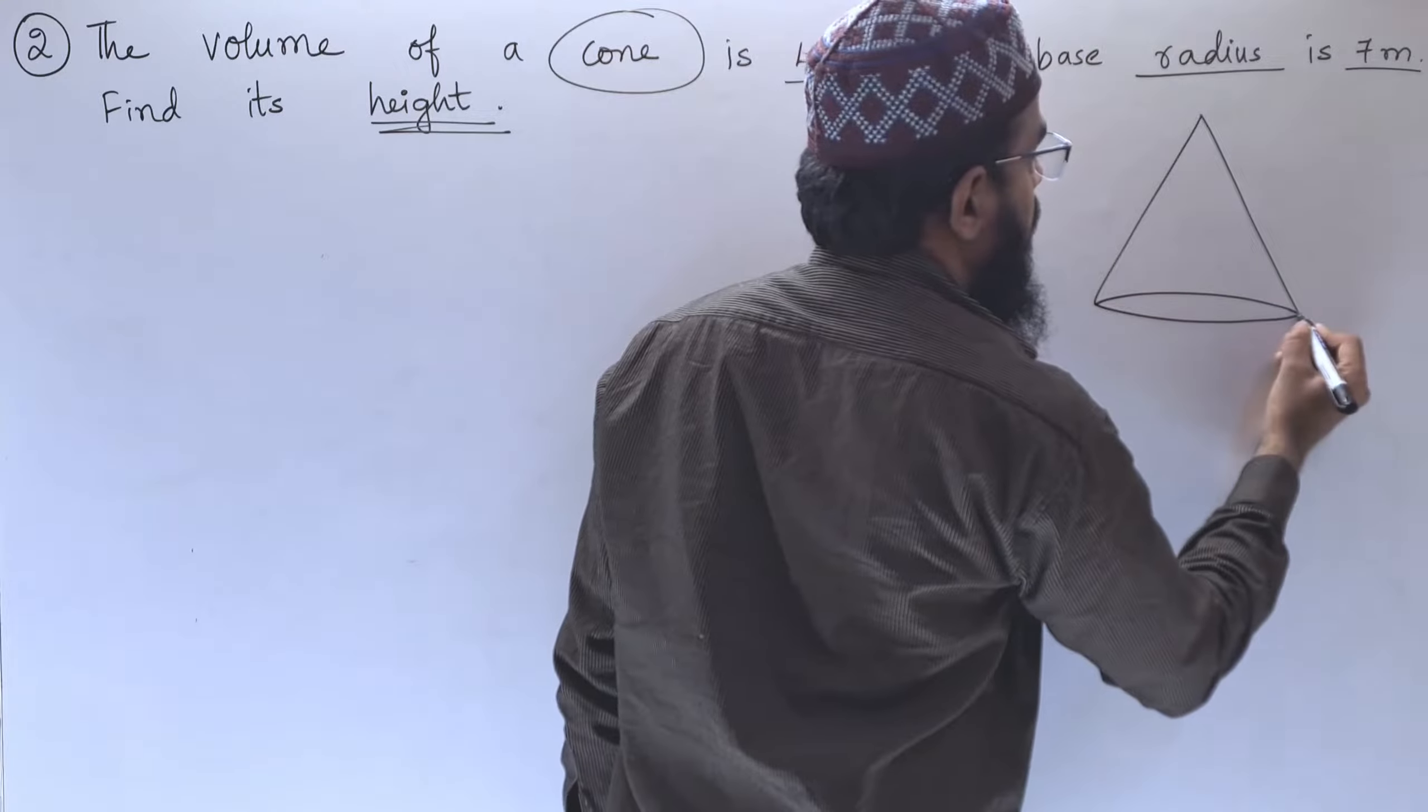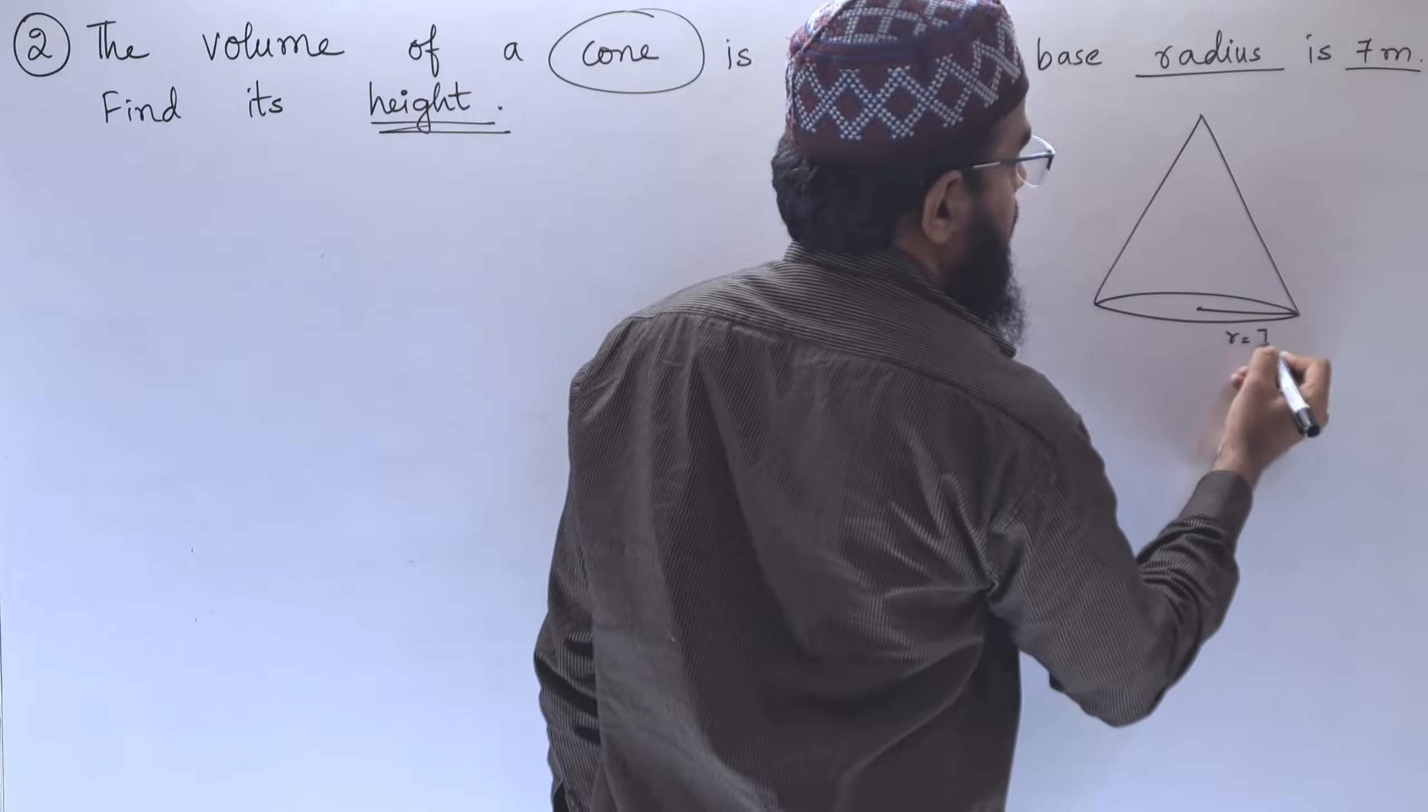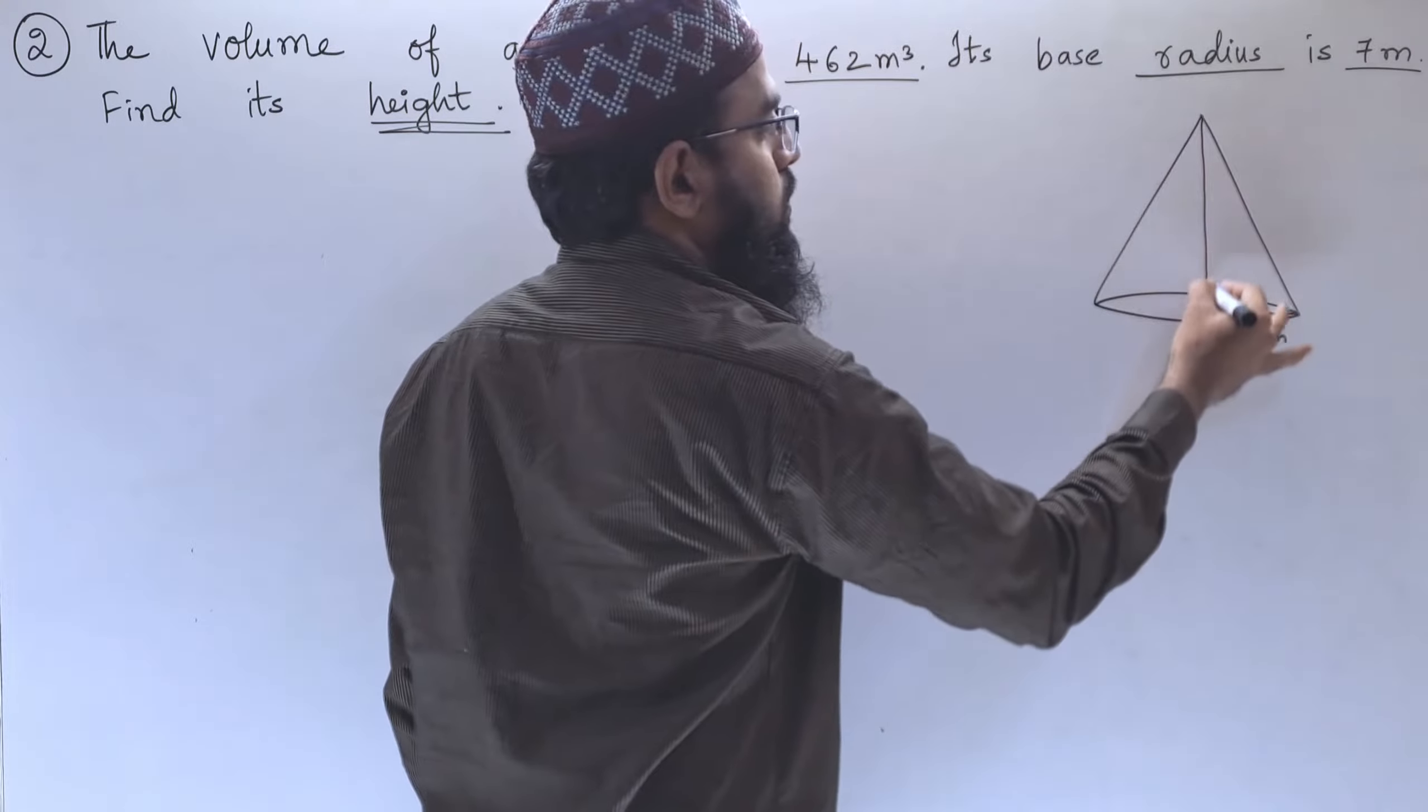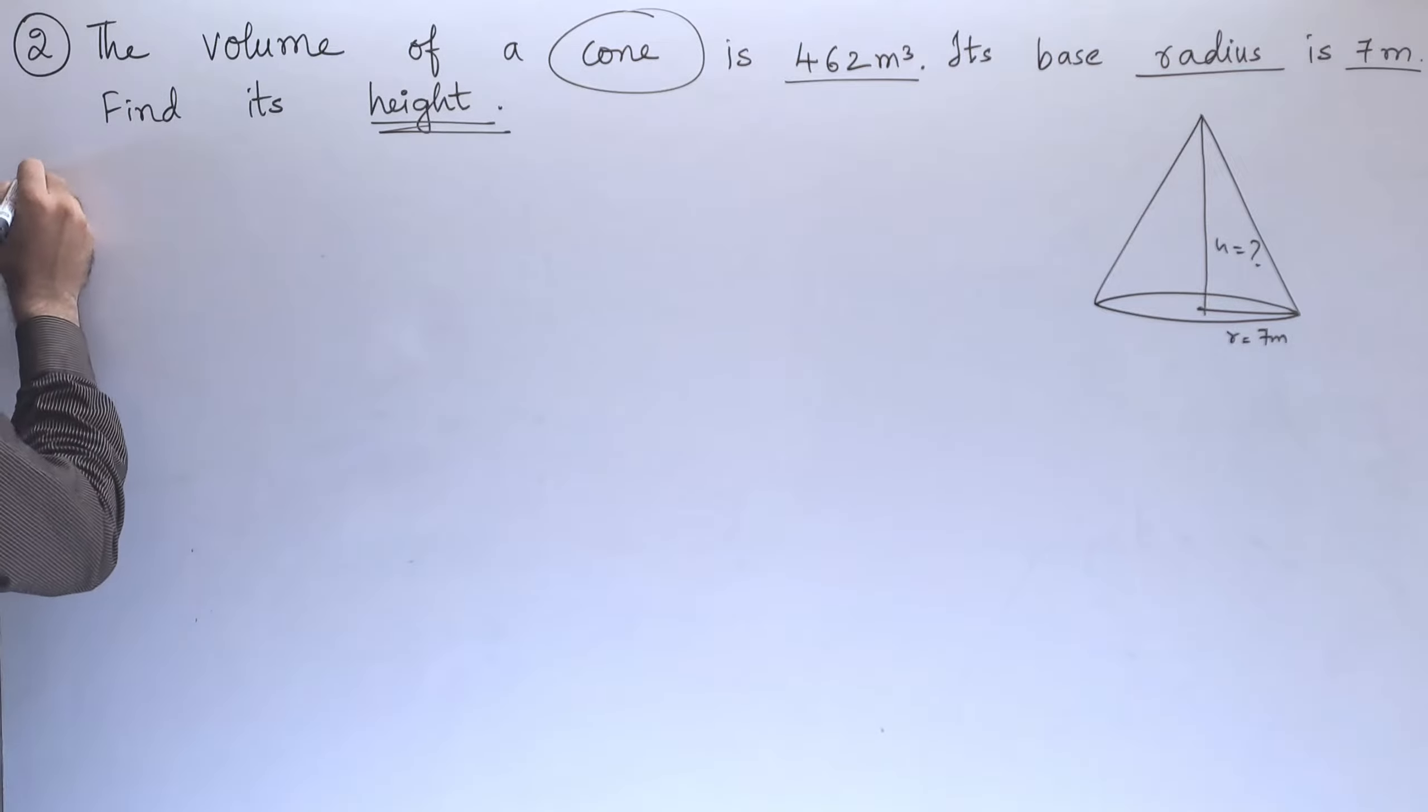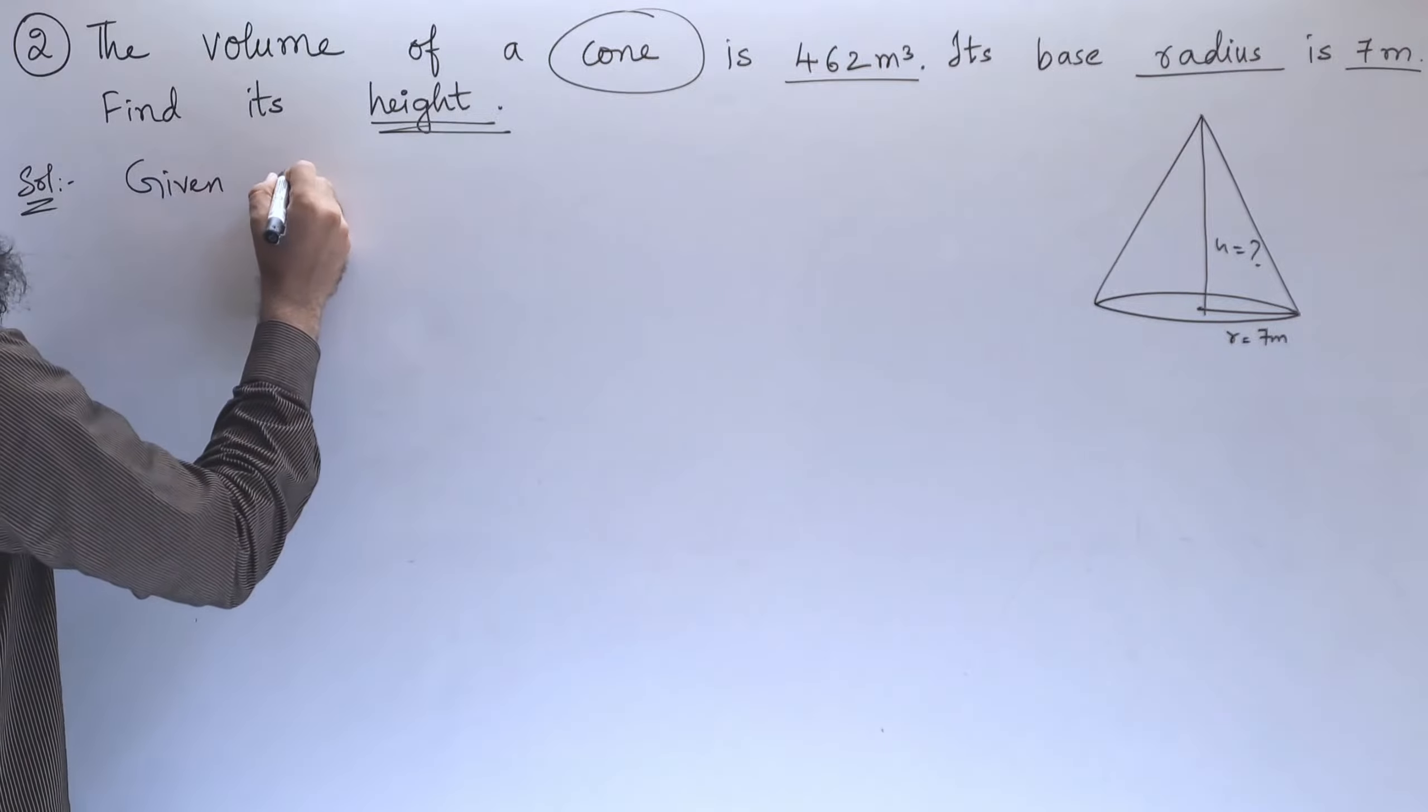For this cone, the radius is given as 7 meters and we need to find out the height. The volume is also given. First of all, let us write in the solution. Given: radius